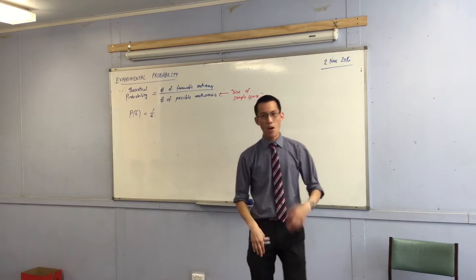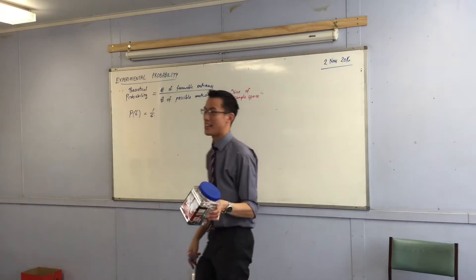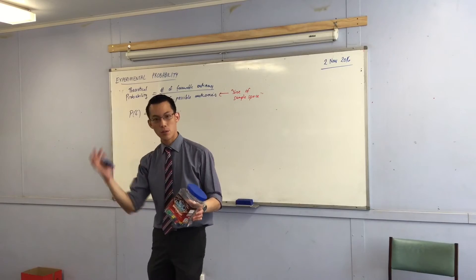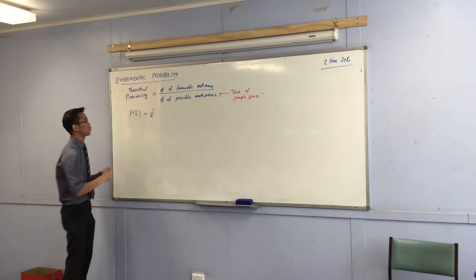But today, we're going to push in that a little bit. What if we actually got the dice out and we started to roll it, okay? Now, this idea here, as the heading suggests, is called experimental probability.